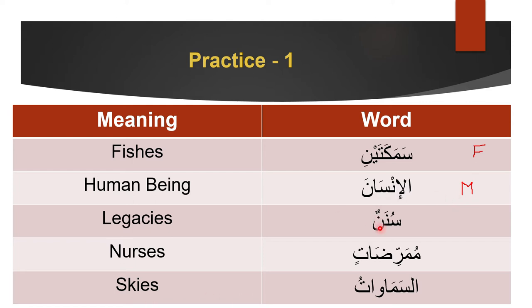Next: sunan. It has a tanwīn ending so it can be a broken plural or singular. The meaning is 'legacies,' which tells us it is a broken plural. Since it is a non-human broken plural, this word is definitely feminine singular. Next word: it has a clear feminine plural ending -āt, and it means 'nurses,' so it's a human feminine plural — obviously female.